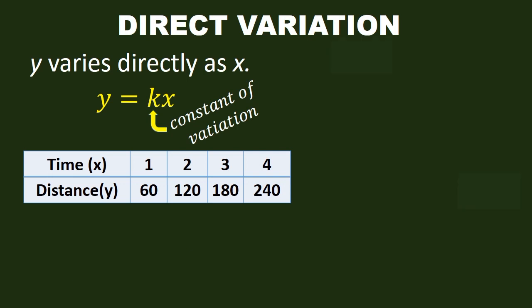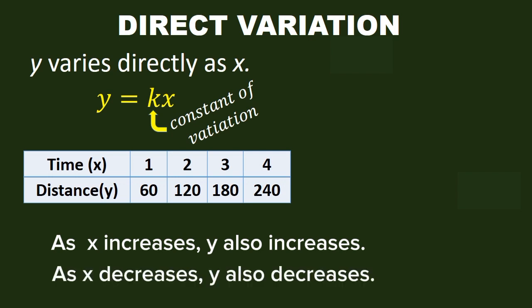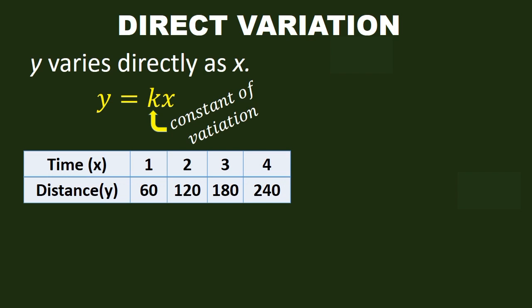Generally, direct variation involves two variables, so that when one variable increases, the other also increases. Similarly, when one variable decreases, the other also decreases. As time x increases from 1 to 5, the distance y increases from 60 to 300.